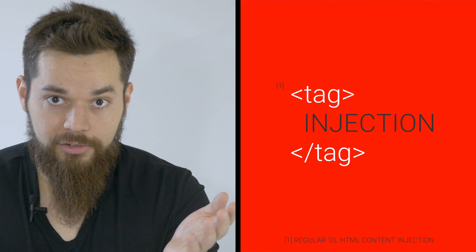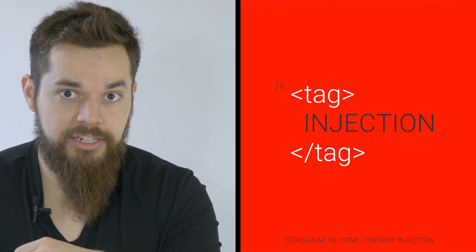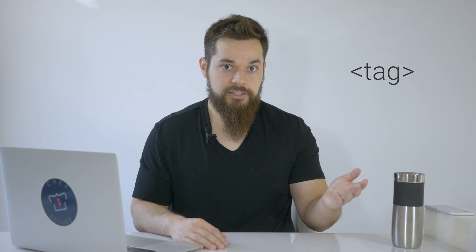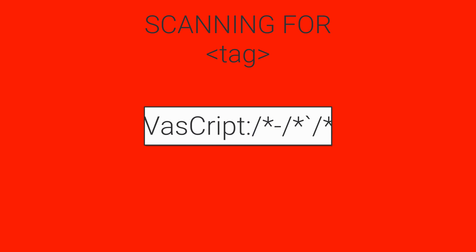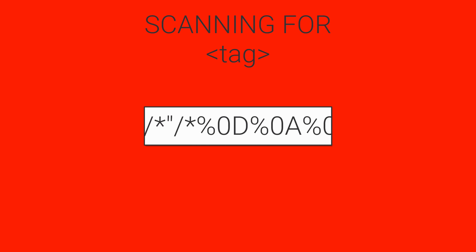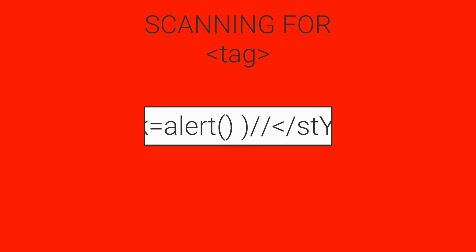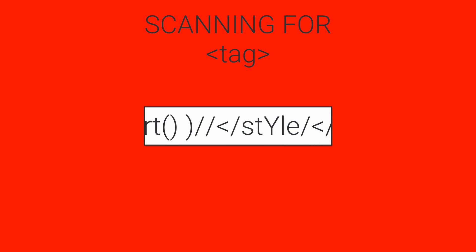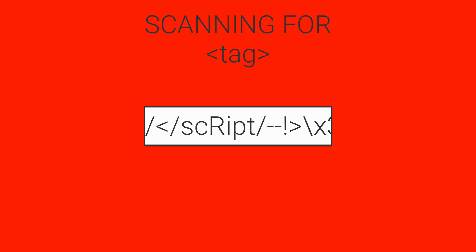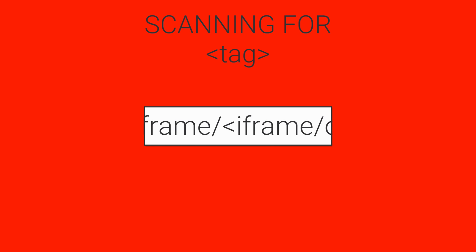Let's look a little closer, starting off with a regular old HTML content injection. We know there needs to be an opening tag in order to launch an attack, so let's just scan the polyglot until we find one. That's a closing tag — nope, another closing tag. Here we go. We're now opening an iframe element. As a side note, a forward slash can be used after a tag name in place of a space character, which is helpful for bypassing filters.